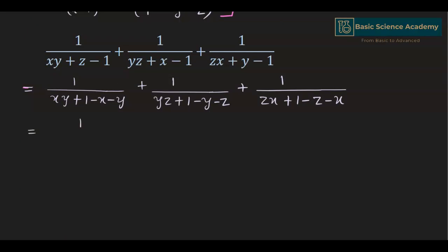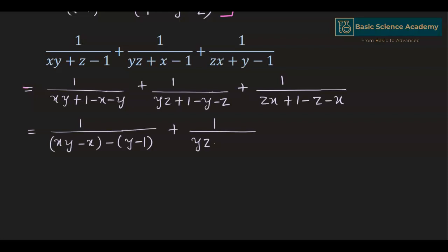This gives us 1 divided by xy minus x minus y plus 1, plus 1 divided by yz minus y minus z plus 1, plus 1 divided by zx minus z minus x plus 1.